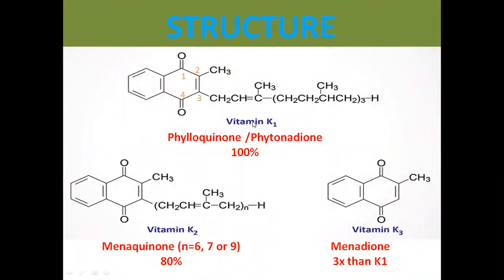First, looking at the structure of Vitamin K1, which is derived from plant sources. The chemical name is phylloquinone or phytonadione, and this form is 100% potent. The ring structure is called the naphthoquinone ring. At carbon number 3 of the ring, a radical is attached, which is called the phytol radical.